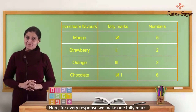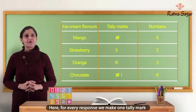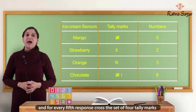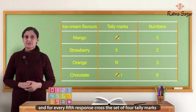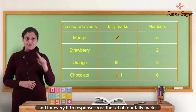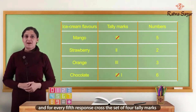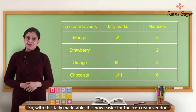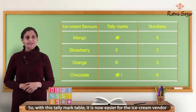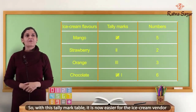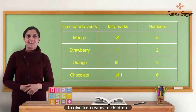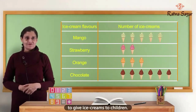Here, for every response, we made one tally mark. And for every fifth response, cross the set of four tally marks to make a group of five. So with this tally mark table, it is now easier for the ice cream vendor to give ice creams to children.